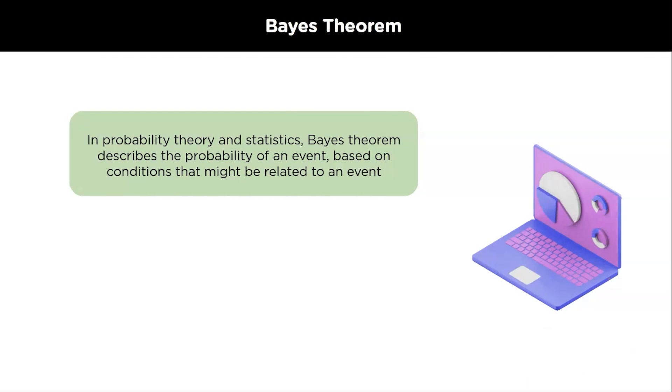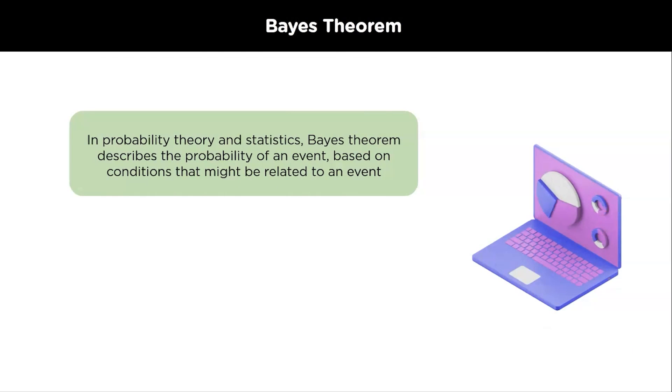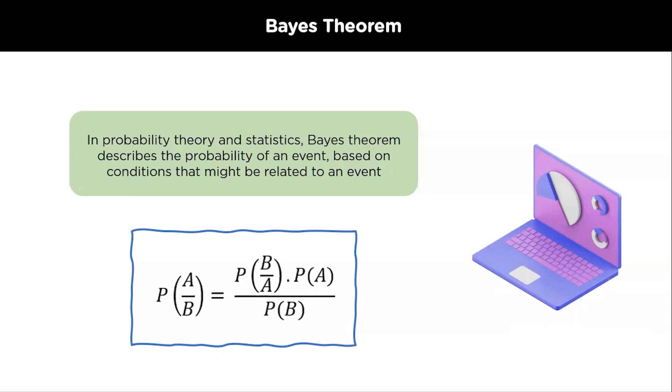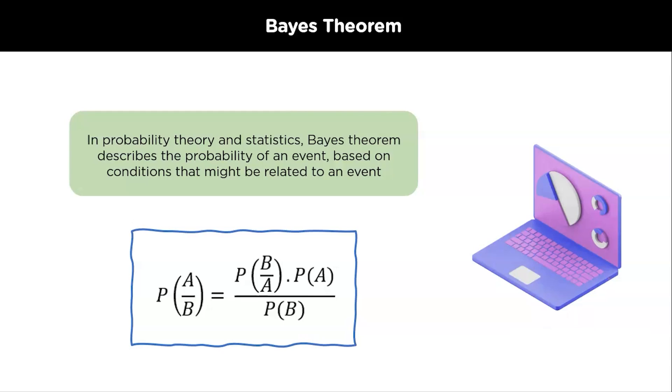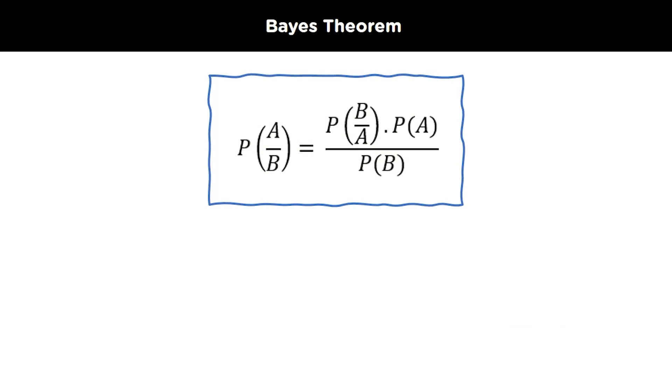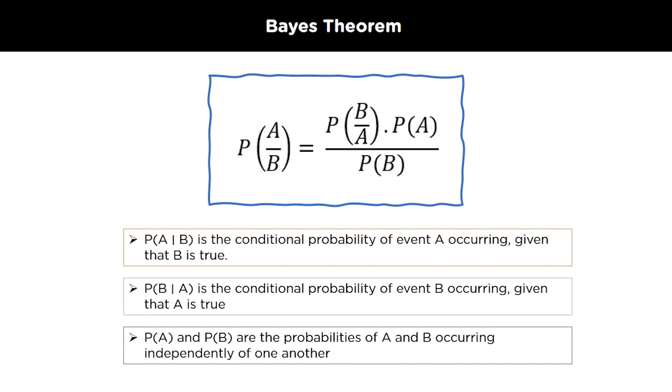The Bayes theorem is a mathematical formula for calculating conditional probability in probability and statistics. In other words, it is used to figure out how likely an event is associated on its proximity to another. Bayes law or Bayes rule are the other names of this theorem. The formula for the Bayes theorem can be written in a variety of ways. The most common version is P A slash B is equal to P of B slash A into P of A divided by P of B, where P A slash B is the conditional probability of event A occurring given that B is true and P A and P of B are the probabilities of A and B occurring independently of one another.